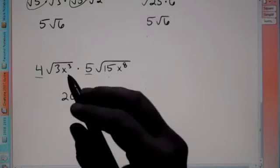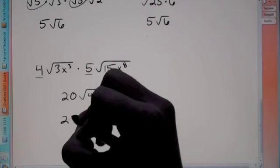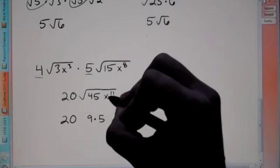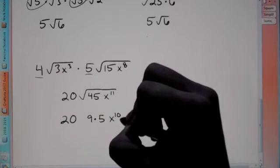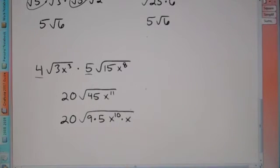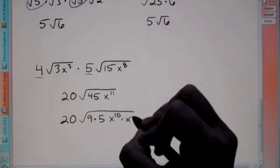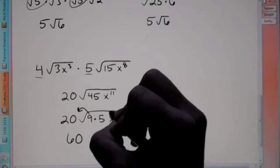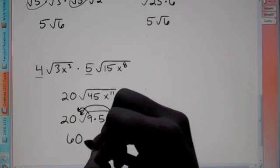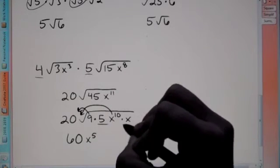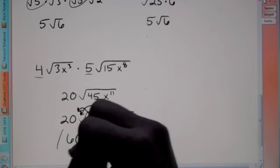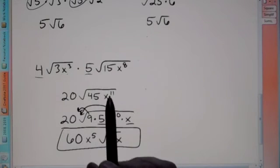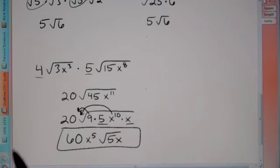Now we've multiplied underneath the root, let's see if we can break it down. 45 breaks down to be 9 times 5. For the odd exponent 11 — just subtract 1 — so x to the eleventh is the same as x to the tenth times x to the first. The square root of 9 is 3, times 20 is 60. The square root of x to the tenth — cut the exponent in half — becomes x to the fifth, leaving us with 5x underneath. So our final answer is 60x to the fifth root 5x.